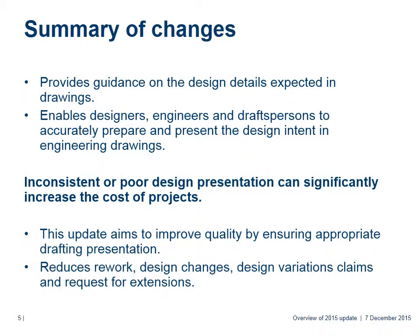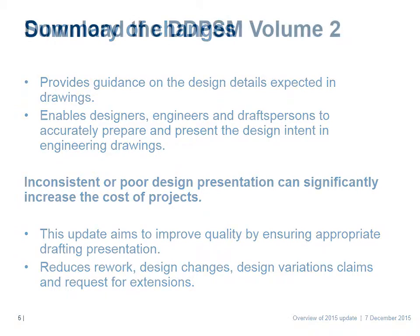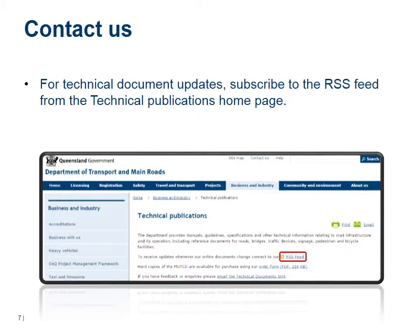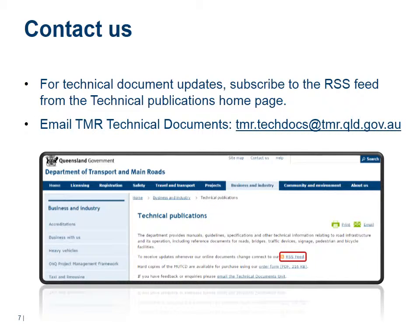The intention is that this will reduce rework, design changes, design variation claims and requests for extension of time. The latest technical documents are published on the TMR website. To locate the manual, you can simply enter DDPSM into the search box. For Transport and Main Roads technical document updates, subscribe to the RSS feed from the Technical Publications homepage under the Business and Industry section. If you have any questions or feedback, please email TMR Technical Documents.